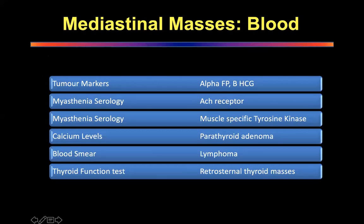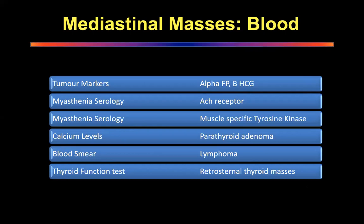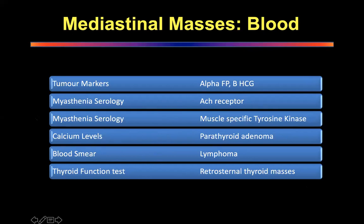Tumor markers are important to remember — not just alpha-fetoprotein and beta-HCG. You must know about acetylcholine receptor antibodies, muscle-specific tyrosine kinase, calcium levels for parathyroid adenomas, blood smear which is very specific for lymphoma, and thyroid function tests for retrosternal masses. When you have an anterior mediastinal mass, you must mention thyroid function tests. These lower three are commonly forgotten.